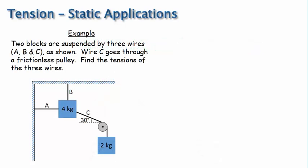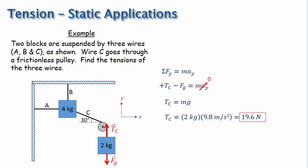Two blocks are suspended by three wires, A, B, and C, as shown. Wire C goes through a frictionless pulley. Find the tensions of the three wires. The basic strategy here is to apply Newton's second law to each of the blocks. Let's start with the 2-kilogram block. There is only one contact point on the block, and that is wire C. So we have the tension force for wire C in the positive y direction, and then we have the force of gravity on the block in the negative y direction. Now we'll apply Newton's second law in the y direction. Recognizing that the acceleration is zero, we can set the force of gravity equal to mg and solve the equation for tension C. Putting in values for m and g, we get that tension C is 19.6 newtons.